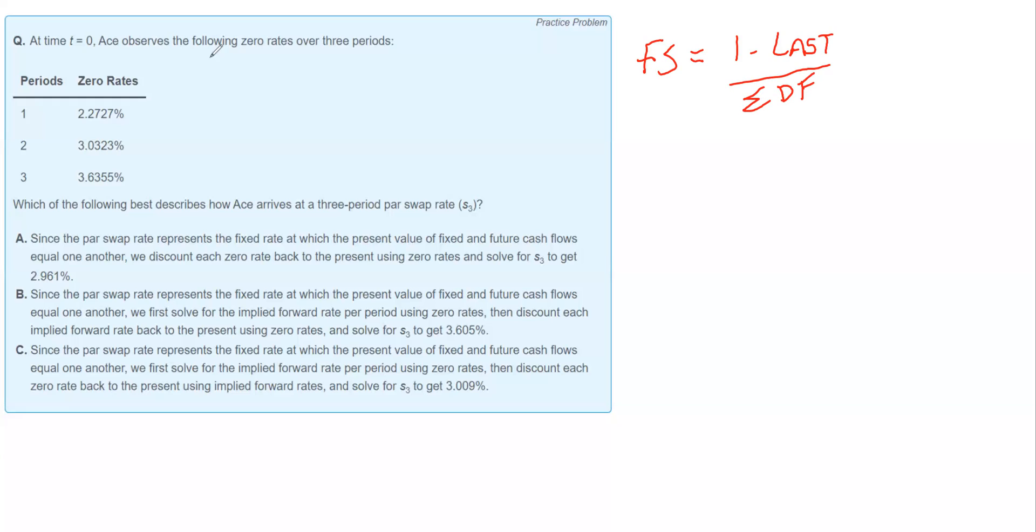So step one, we're going to get the discount factors. The discount factors come right from these zero rates. So we're going to do one divided by one plus this zero rate, which is in decimal format 0.022727. And if we do that math, we end up with 0.9778. That's our first discount factor.